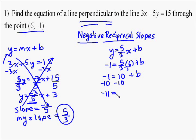So your solution is y equals 5 thirds x plus negative 11, or minus 11, whatever you want to say.